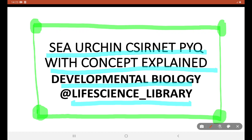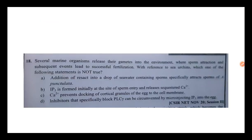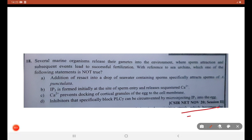Hello all, welcome. In this video we are going to see about CSIR NET previous year question concept series, developmental biology unit 5, CSIR NET life science portion. It will also be of great help to get life science candidates. You're watching this on Life Science Library. First question from November 2020: several marine organisms release their gametes into the environment.